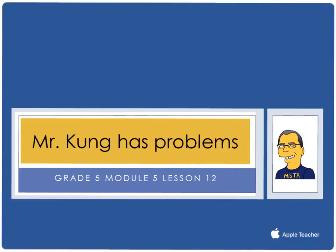Hello, and welcome to another episode of Mr. Kung Has Problems. Tonight in grade 5, we are working in module 5 and on lesson number 12, and that means that we are measuring to find the area of rectangles with fractional side lengths. So let's take a look at a couple of problems from tonight's homework.